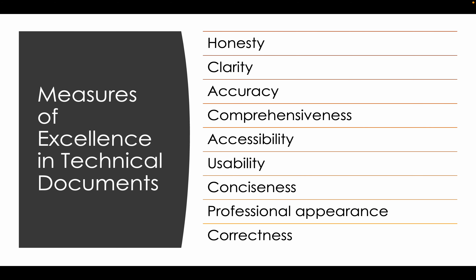There are some things you want in all of your technical documents, regardless of audience, purpose, or document type. These are: honesty, clarity, and accuracy. Comprehensiveness — make sure you cover everything you need to cover. Accessibility — everyone who needs to interact with the document can. Usability — the document meets its goal and the reader can use it. Conciseness — no extra fluff. Professional appearance. And correctness.